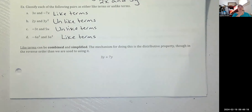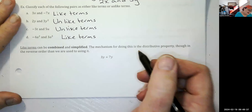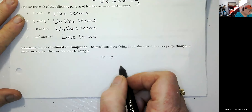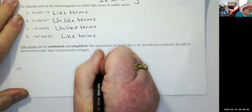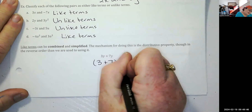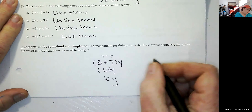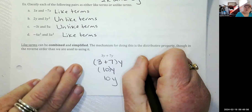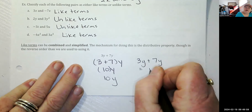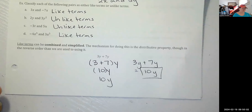Like terms can be combined and simplified using the distributive property — but only addition and subtraction; multiplication and division can happen with unlike terms. So 3y plus 7y: think of it as three plus seven, times y, equals 10y. That's the magic of like terms.